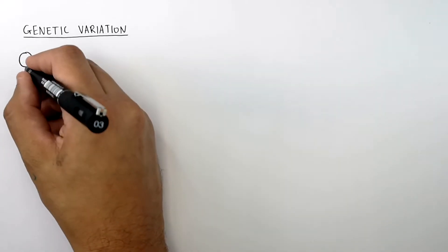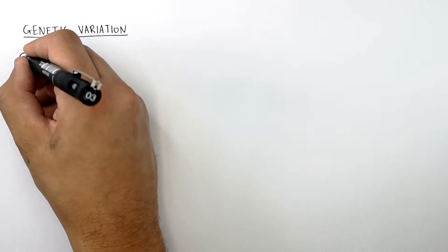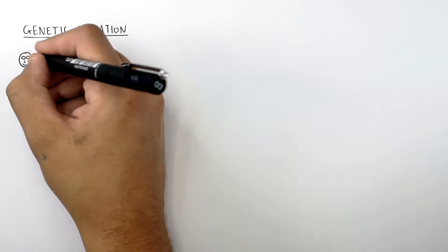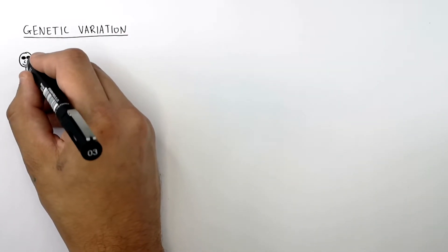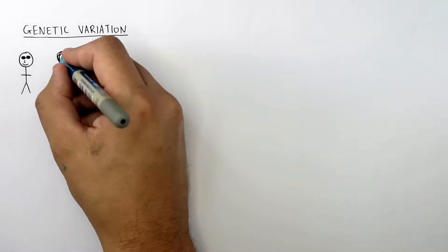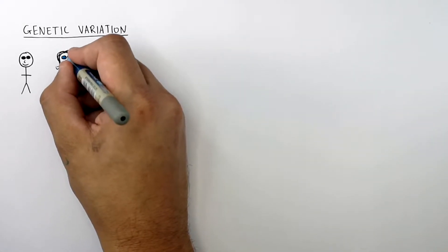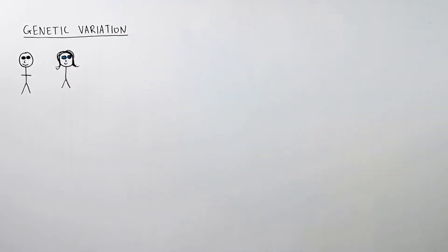So we're now going to look at genetic variation. This here is a man and he has brown eyes, and this here is a woman with blue eyes. So what is the variation between these two people? Well, the man has brown eyes, the woman has blue eyes. The man has short hair, the woman has long hair. The man is a man and the woman is a woman. Those are examples of differences in their characteristics — their variation.